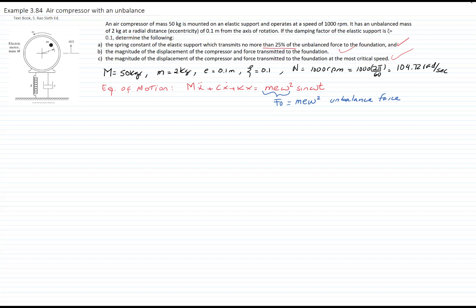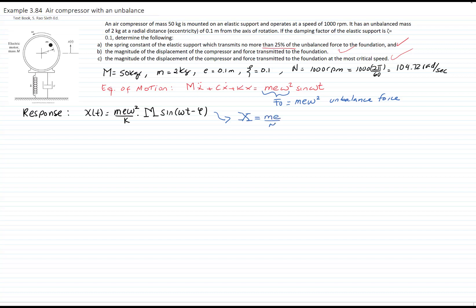We know the response of this type of second-order differential equation. The response will be equal to the force divided by the spring constant times the amplification factor, sine of omega t minus a phase angle. The amplitude of the response will be equal to the first term, and the magnitude will be equal to M·e over the mass of the machine times R squared times the amplification factor.